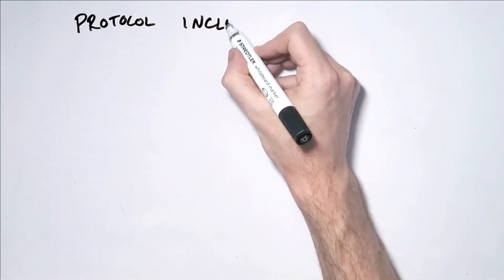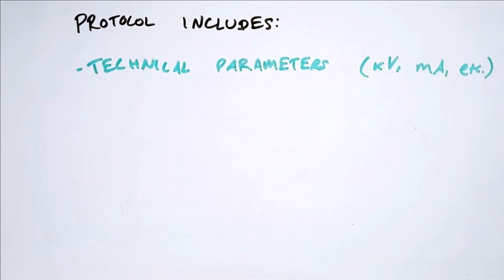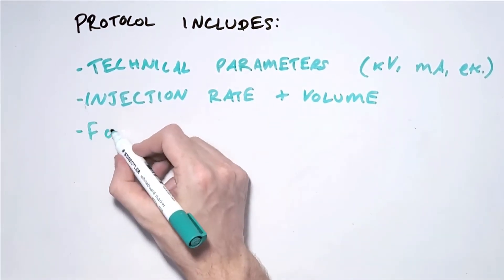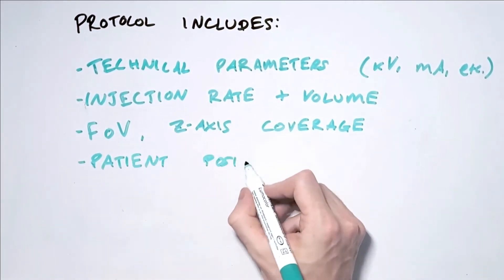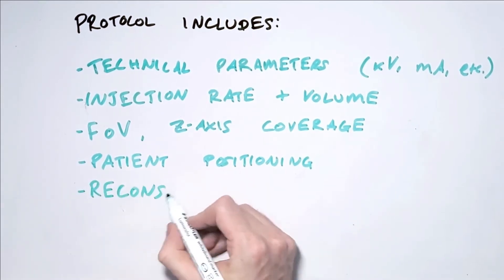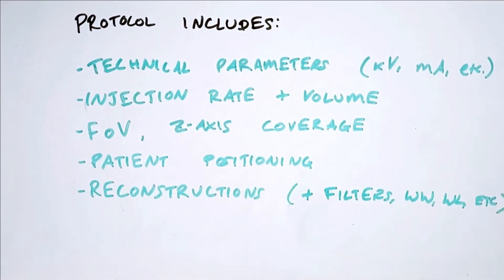So each different scan protocol can have different technical parameters, different injection rates and volumes, different requirements for field of view and z-axis coverage, different patient positioning, different prep protocols and requirements, different reconstructions that will be built, and so on. All of these things tie into an imaging protocol, so it's not just as simple as a set of technical parameters — there's a lot more to it.